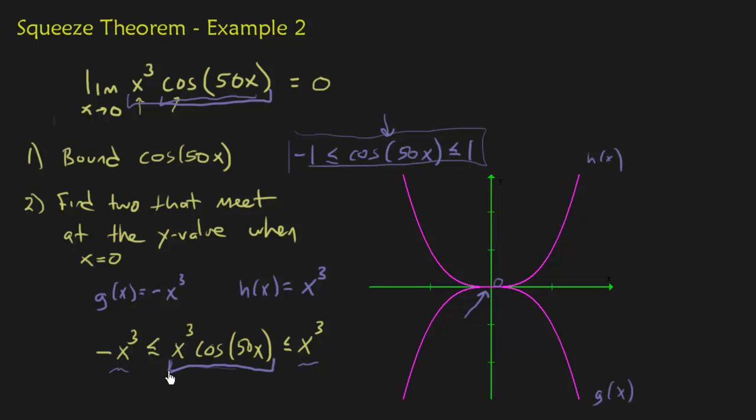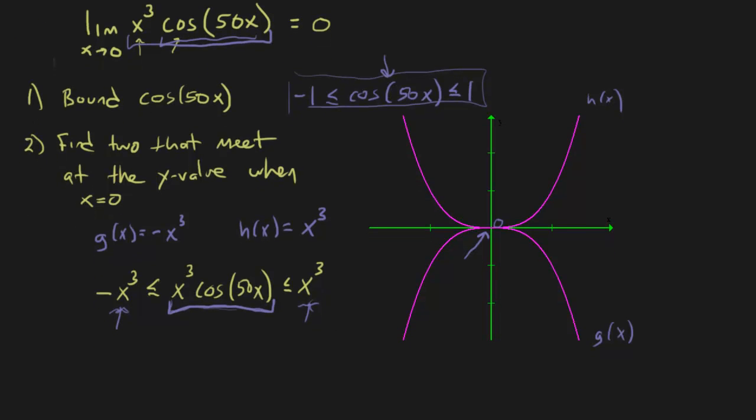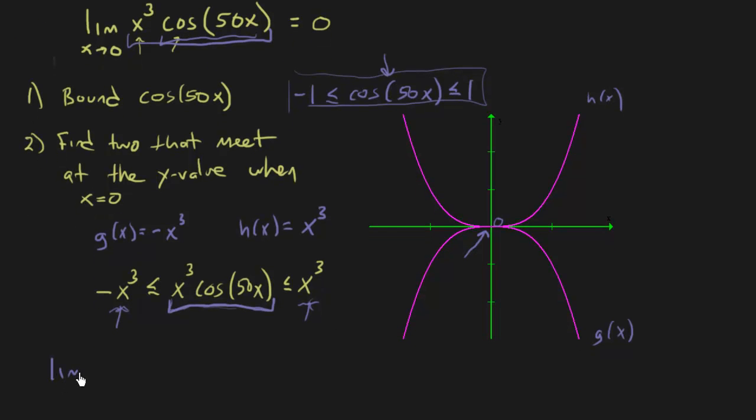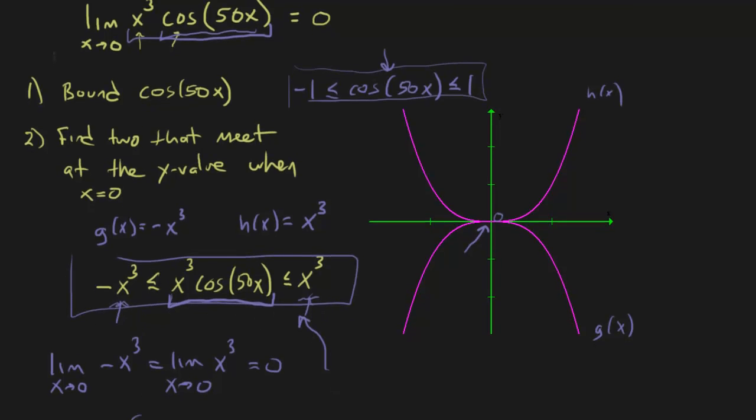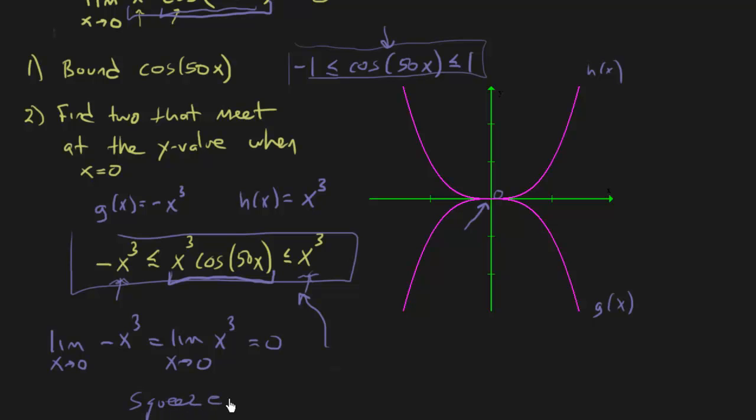So now, I just showed that this function stays between this one and this one. We know that the limit of negative x cubed as x approaches 0 equals the limit of positive x cubed as x approaches 0. So the squeeze theorem states that the limit of the middle function, which is x cubed cosine of 50x, as x approaches 0, must also equal 0.